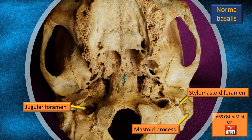The large mastoid process can be seen in one corner, and immediately medial to it is the stylomastoid foramen. In the actual skull, it is easy to identify because it is right behind the styloid process. The mastoid process is a bulky area laterally, and the mastoid foramen is prominently visible in the circled area. On the opposite side, a dark large region communicating with the posterior cranial fossa is the jugular foramen, which carries large vessels and important cranial nerves.